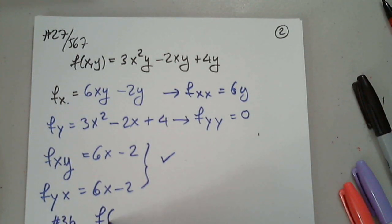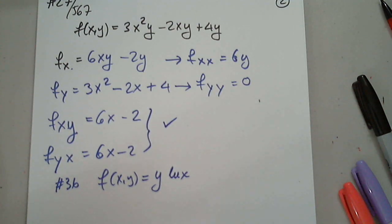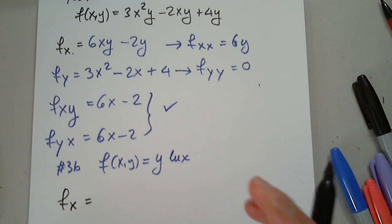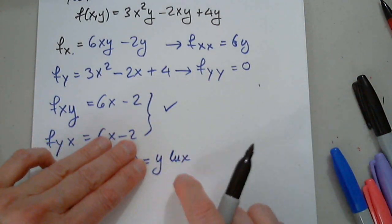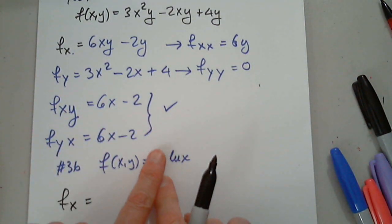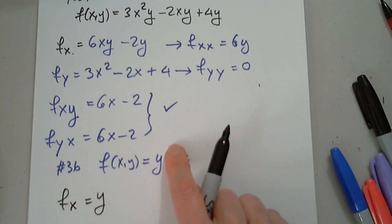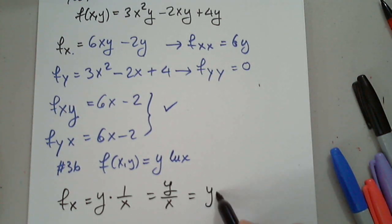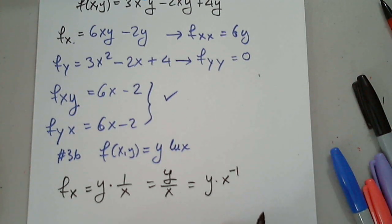In 36, we have f of x y equals y natural log x. Perfect. Good. Good. So we want to find fx. We are differentiating this function with respect to x. So this is a constant. It will stay in front. And now I have to differentiate this with respect to x. That's it. You can also write it as y over x, if that's more convenient. You can also write it as y times x to negative 1, if that's more convenient. All of the above.